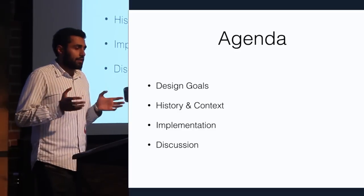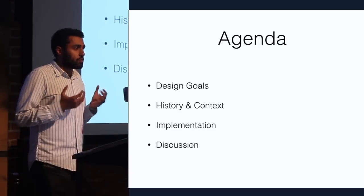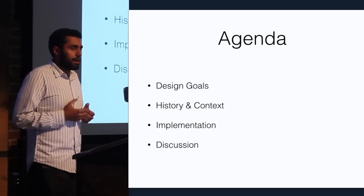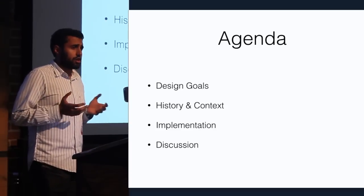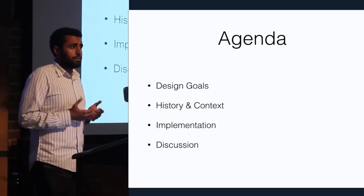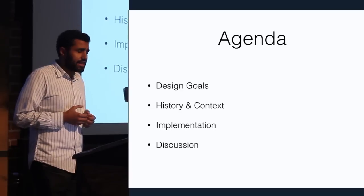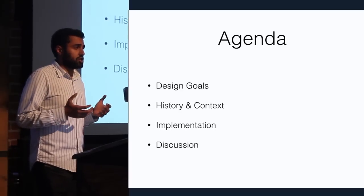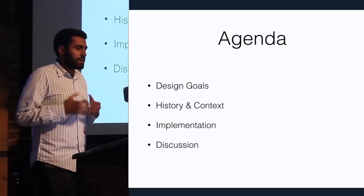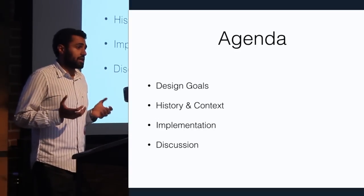I'm going to cover VL2 in a couple of different ways. First, I'll start with the design goals and what the folks at Microsoft are trying to achieve with VL2. Then I'll shed light on the history and context of where we came from — what networks used to look like before VL2 existed. Then I'll go into the actual implementation of the network VL2 is using, and a discussion of how that network enables future applications and data centers.